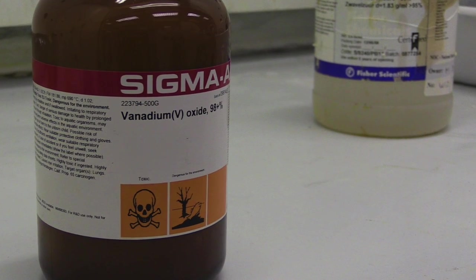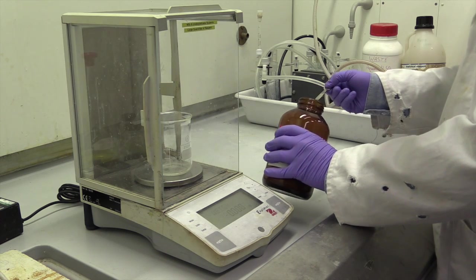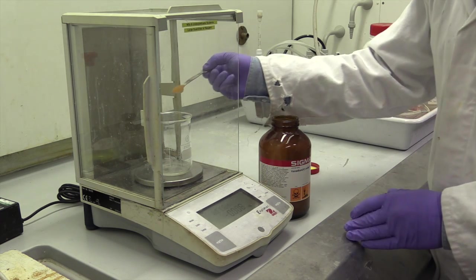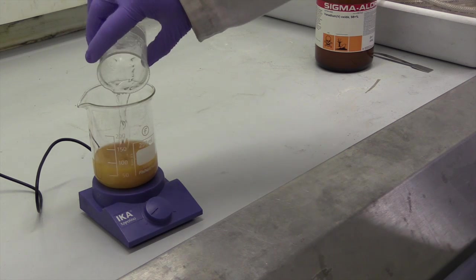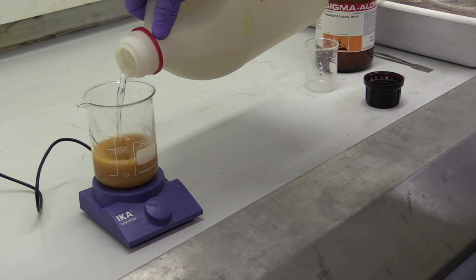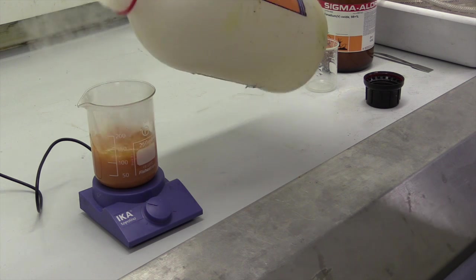The electrolyte consists of vanadium pentoxide, which is in the form of V5, sulfuric acid, and water. You dissolve vanadium with sulfuric acid in the water.